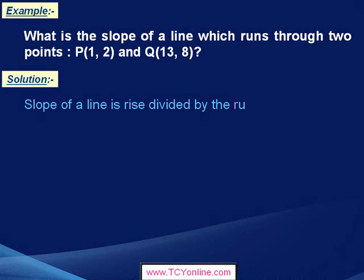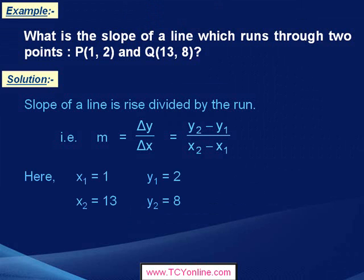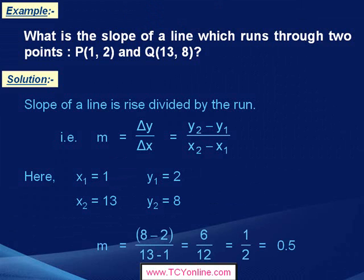Now, we know that slope of a line is simply rise over run, that is change in y-coordinates over change in x-coordinates. We are aware that x1 equals 1, x2 equals 13, y1 equals 2, and y2 equals 8. So that means slope is simply 8 minus 2 over 13 minus 1, which is equal to 6 over 12.